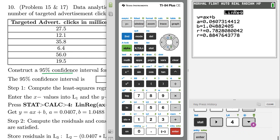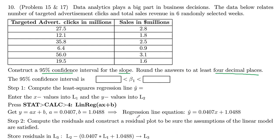So our slope is 0.0407 and our y intercept is 1.0488. And those are here, 0.0407 and 1.0488. So that means our regression line has the form 0.0407x plus 1.0488.